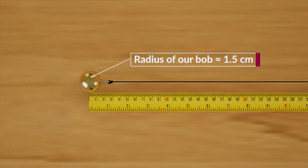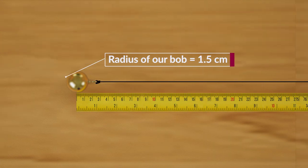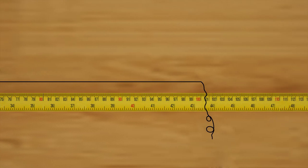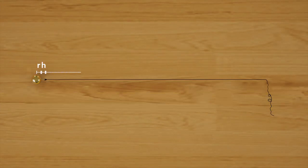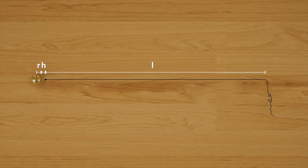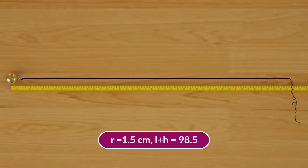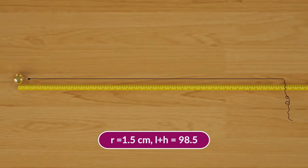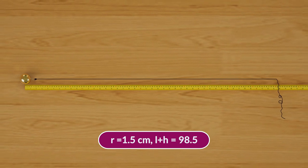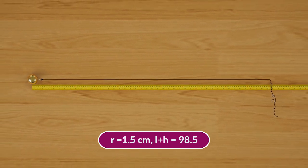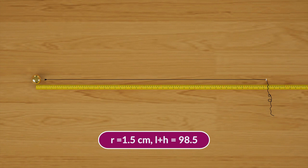The radius of our bob is 1.5 centimeters. Find out the length of the thread and the hook together, required to make the effective length of the pendulum L = l + h + r, an integer value — say 100 centimeters. Since the radius of our bob is 1.5 centimeters, l + h should be 98.5 centimeters.